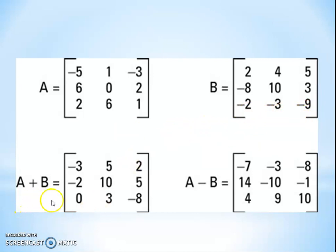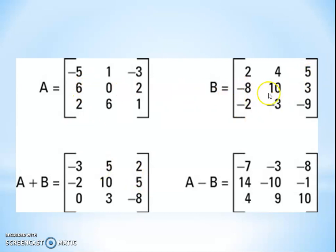Now we take A plus B. -5+2 = -3; 1+4 = 5; -3+5 = 2; 6+(-8) = -2; 0+10 = 10; 2+3 = 5; 2+(-2) = 0; 6+(-3) = 3; 1+(-9) = -8.